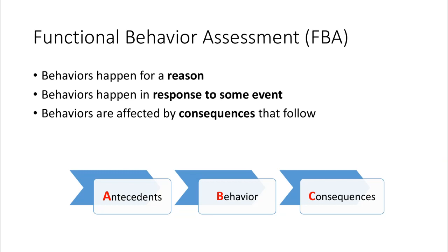One of the first aspects of the alphabet soup is an FBA — a Functional Behavioral Assessment. The primary logic is that behaviors happen for a reason. Behaviors and chronic behavioral issues are not something spontaneous in the classroom. Behaviors in an FBA framework are seen to happen in response to an event. We have an antecedent — something that brings about the behavior — then the resultant behavior, and then consequences. So behaviors are affected by consequences that follow, giving us a cause-and-effect timeline.